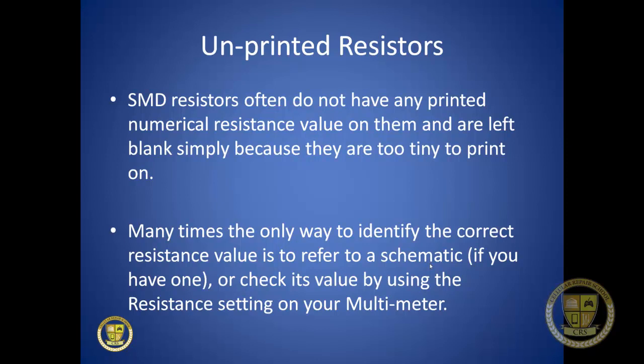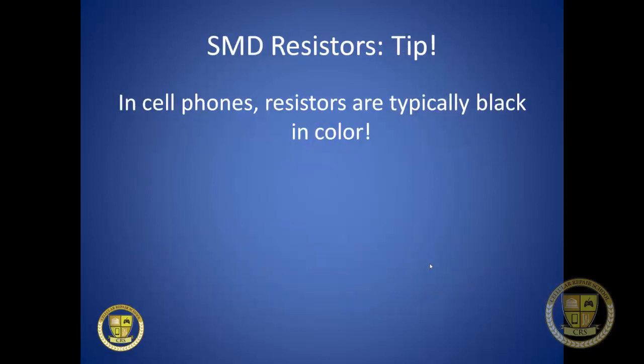Now we get into unprinted resistors, which you'll see quite often in cell phones. SMD resistors often do not have any printed numerical resistance value because they're too small to print on. Many times the only way to identify the correct resistance value is to refer to a schematic or check with the resistance setting on your multimeter. In cell phones, resistors are typically black in color — remember this, as we'll see other colors in other devices.